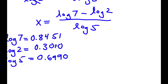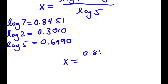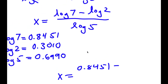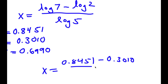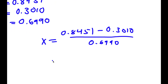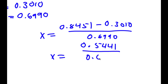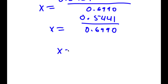Now all that's left is to plug these values into our equation. So x is equal to log 7, which is 0.8451, minus log 2, which is 0.3010, divided by log 5, which is 0.6990. Now 0.8451 minus 0.3010 equals 0.5441, and 0.5441 divided by 0.6990 is approximately equal to 0.778.